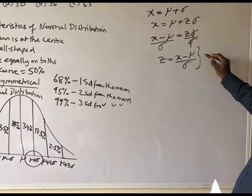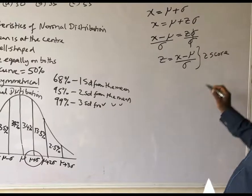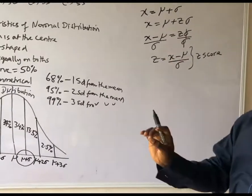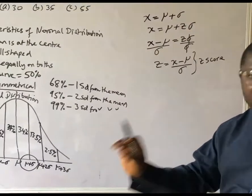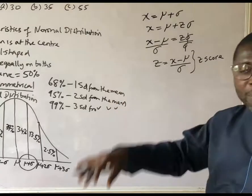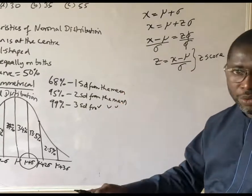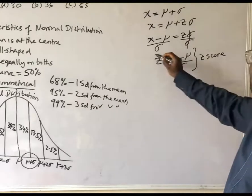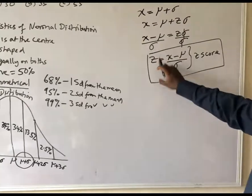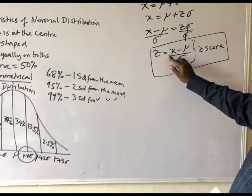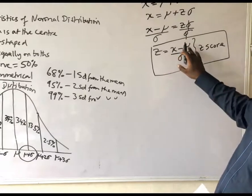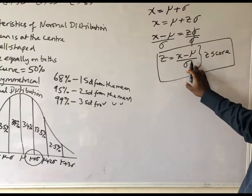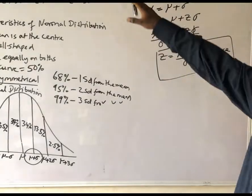This is the value for determining what we call the z-score. This z-score will be used to determine how many standard deviations a particular value is from the mean. From there, we can locate the probability in a probability table. So we must always take note of this formula: z equals x minus mean divided by standard deviation.